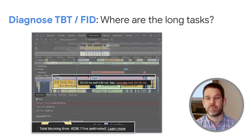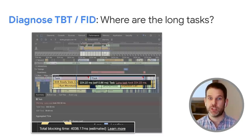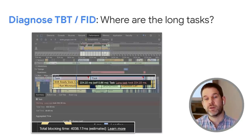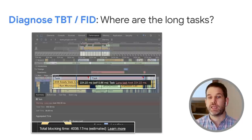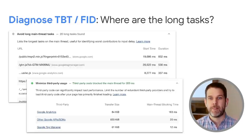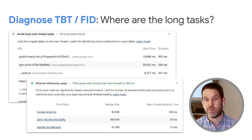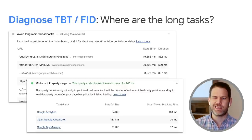Moving on to TBT and first input delay. The key question here is, where are the long tasks? Each of these long tasks is contributing to our total blocking time and input delay. In DevTools, if you record a trace and look at the top of the main thread, you'll see tasks. If those tasks are above 50 milliseconds, it's a long task and DevTools will tell you that. At the bottom of the pane you'll also see the total blocking time metric, computed on the fly based on the trace. In Lighthouse, you can see information about your longest tasks, summarized in descending order — how long they are and what URL they're associated with.